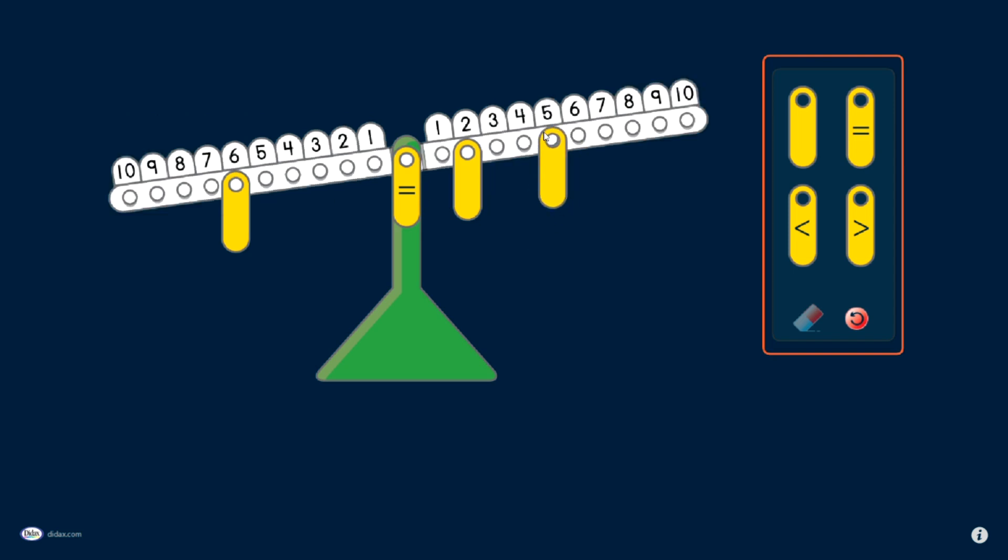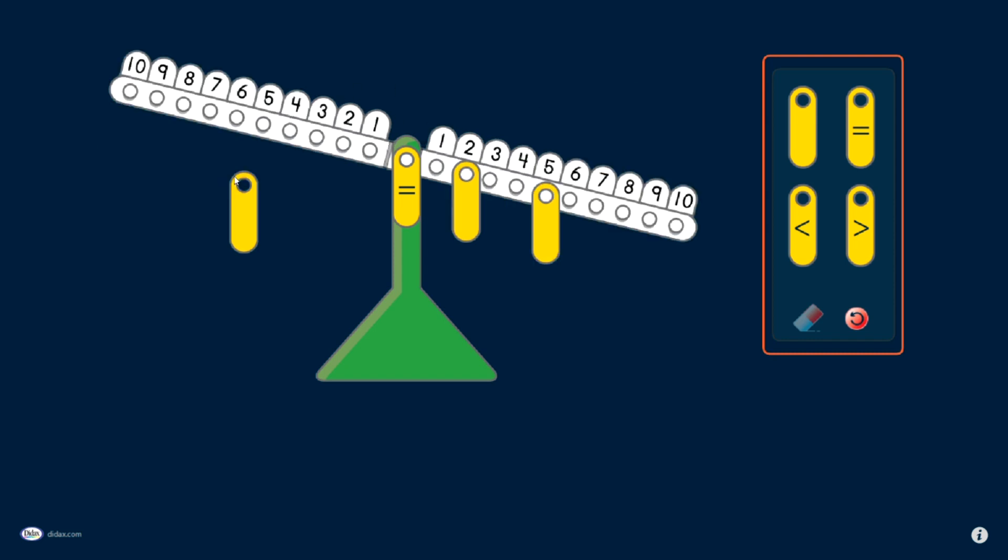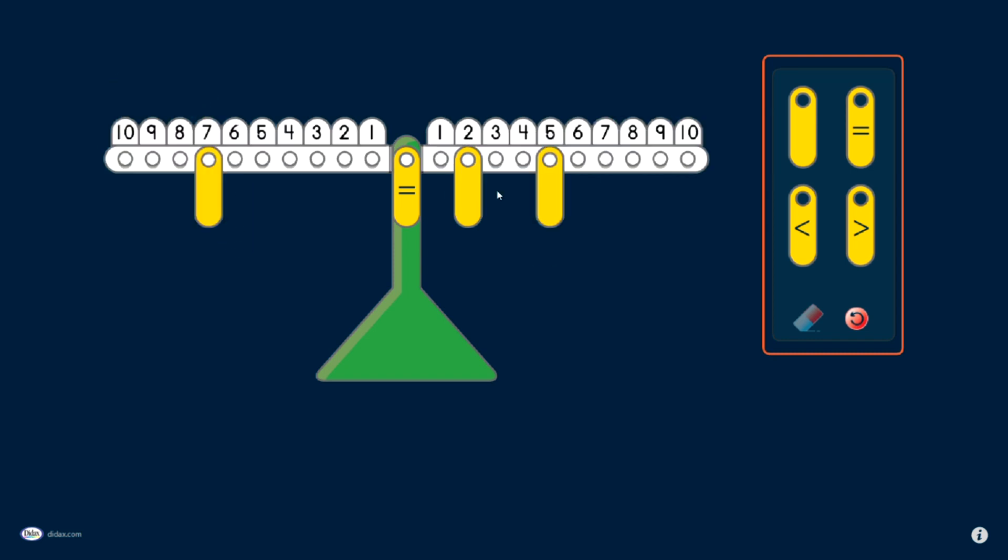I can also see that if I increase this by 1, I'm now out of balance. And in order to bring that back into balance, I need to move this over.